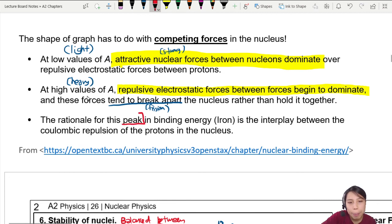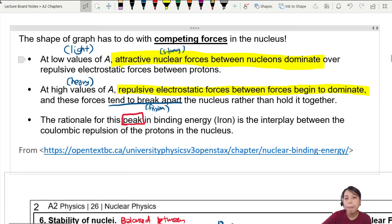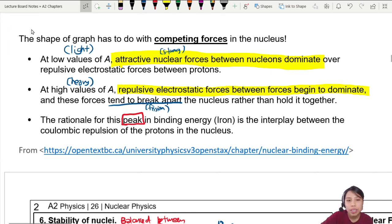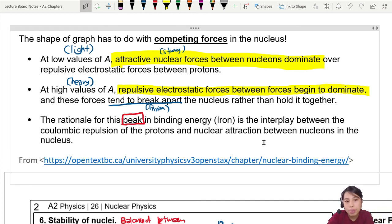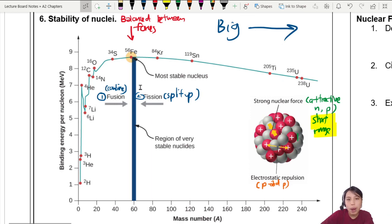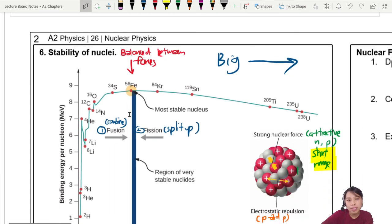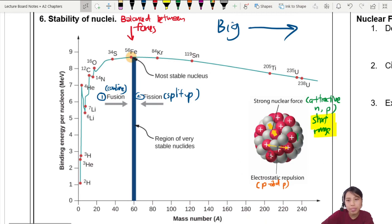So why is there a peak? This peak. The peak in binding energy is the interplay or the balance between the two forces: coulombic repulsion of the protons and nuclear attraction between nucleons, which is proton and neutron in the nucleus. So that is how this graph came to be. You can explain why it looks like that. Why is there stability here? Because of two forces, they are trying to balance each other out.